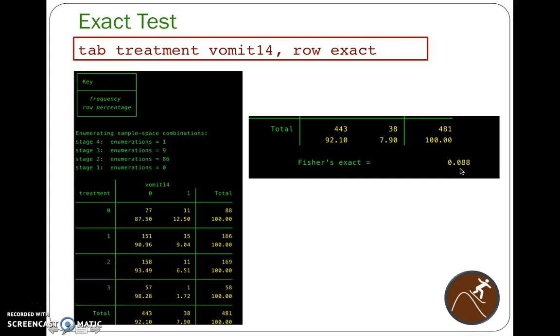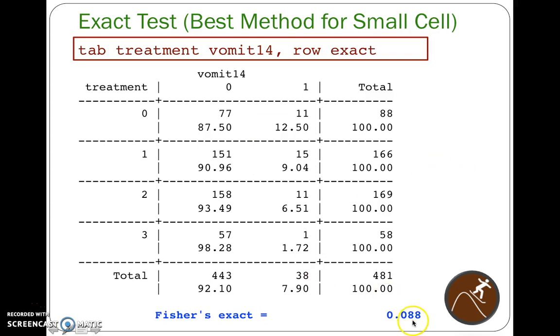So when you see that 0.088, what does that tell you? Is there a statistically significant difference? Well, I would say that since p is greater than 0.05, we have insufficient evidence to conclude that there is a statistically significant difference in vomiting among the groups. Notice I'm saying among the groups because we are comparing all of them. In this case, 0 versus 1 versus 2 versus 3, all these kind of combinations, Fisher's exact test says no statistically significant difference.